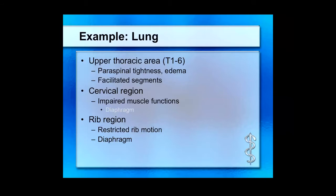For the respiratory model, look at the thoracics T1 through T6 and the cervical region. T3, T4, T5 — 'keep the diaphragm alive' — is something most of us have heard. The neck is a good place to look, and of course when talking about the respiratory system, the ribs are a physical component directly related to the chief complaint.